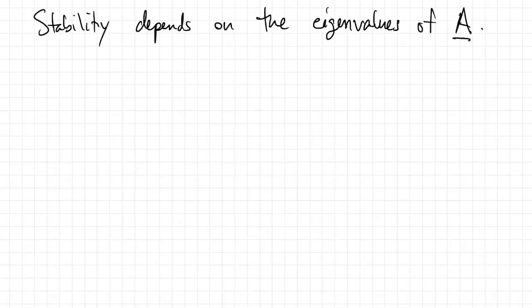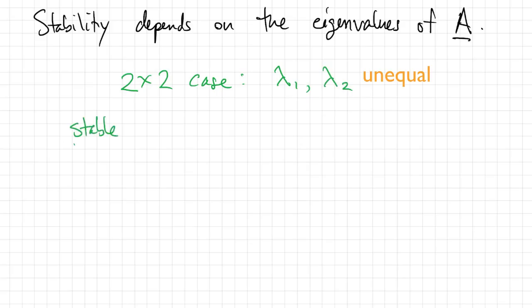Let's specialize on the two-by-two case. So we have two eigenvalues, lambda-1 and lambda-2. I'm going to assume they're unequal because otherwise it gets a little bit more delicate to discuss.